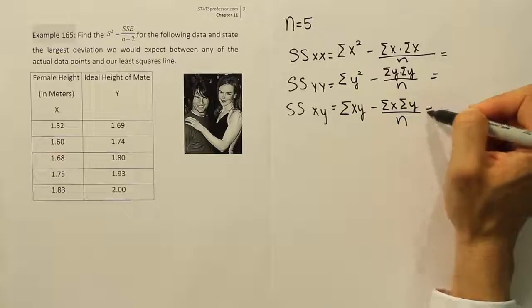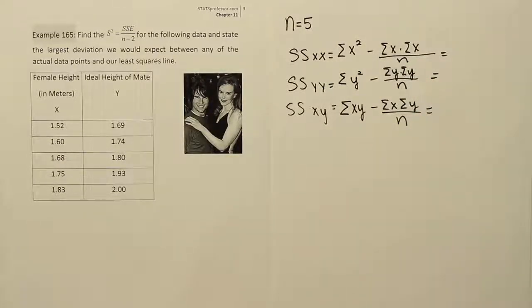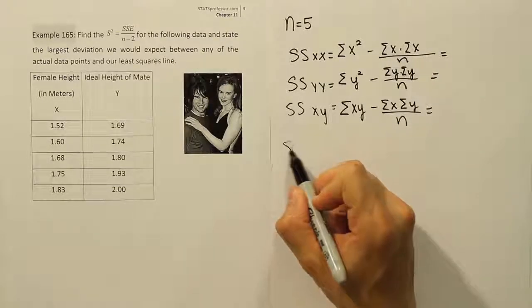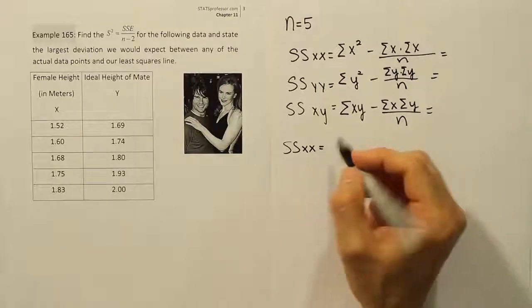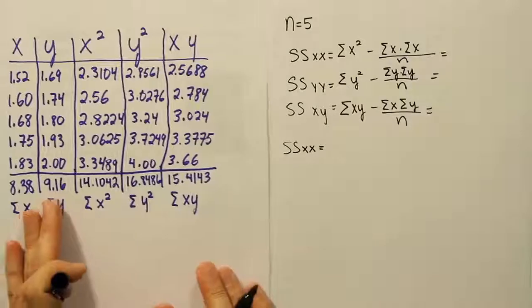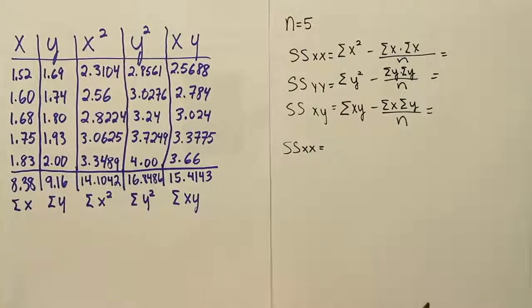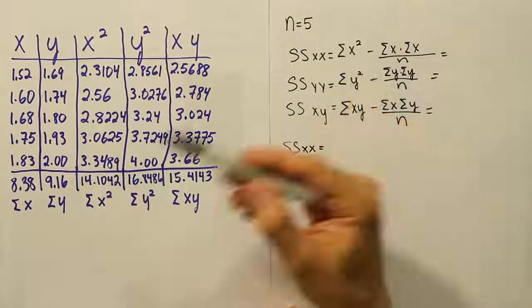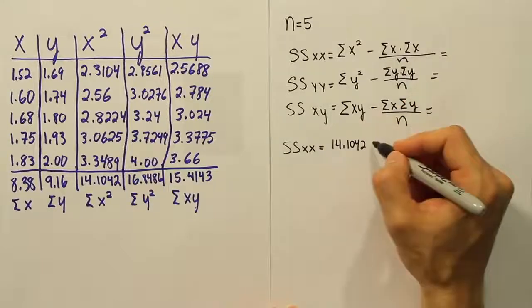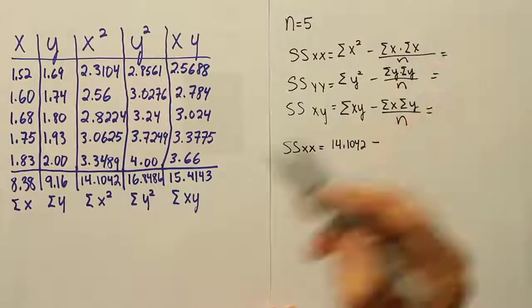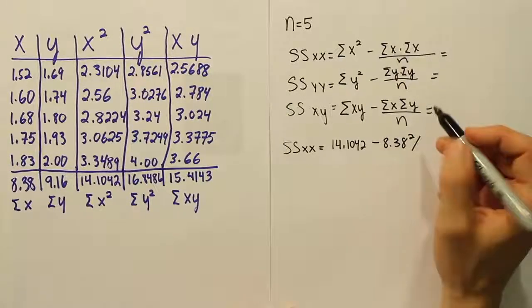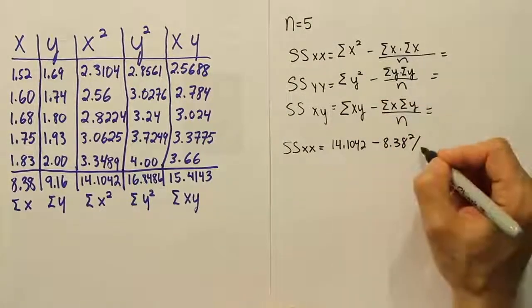So from there, let's go ahead and do the work. We're going to plug in the numbers to get these values. I'll put those numbers up there, but I'll do the work down here. So let's do the work for SSXX. If we do that work, we're going to have to take the values that I've already come up with here. So if I look at the sum of the X squared column, I see that it's 14.1042. Then it'll be minus the sum of X times itself, so 8.38 times itself, 8.38 squared divided by the N. And the N is five as we mentioned.